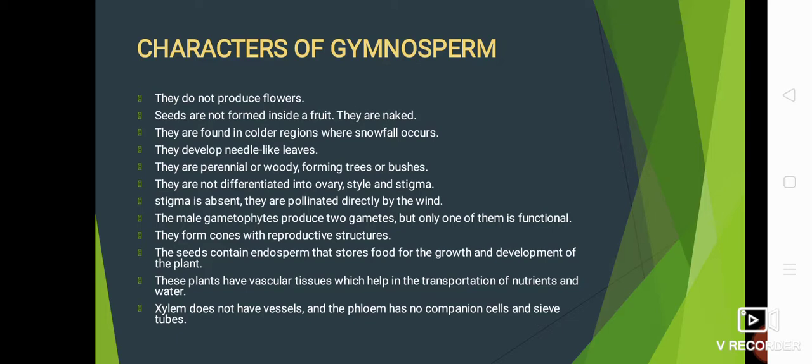General characters of gymnosperm: they do not produce flowers; seeds are not formed inside a fruit — they are naked; they are found in colder regions where snowfall occurs; they have needle-like leaves; they are perennial woody trees; ovary, style, and stigma are not differentiated because flowers are absent. Stigma is absent but pollination occurs directly by wind — wind pollination means pollen grains are transferred from anther to stigma.